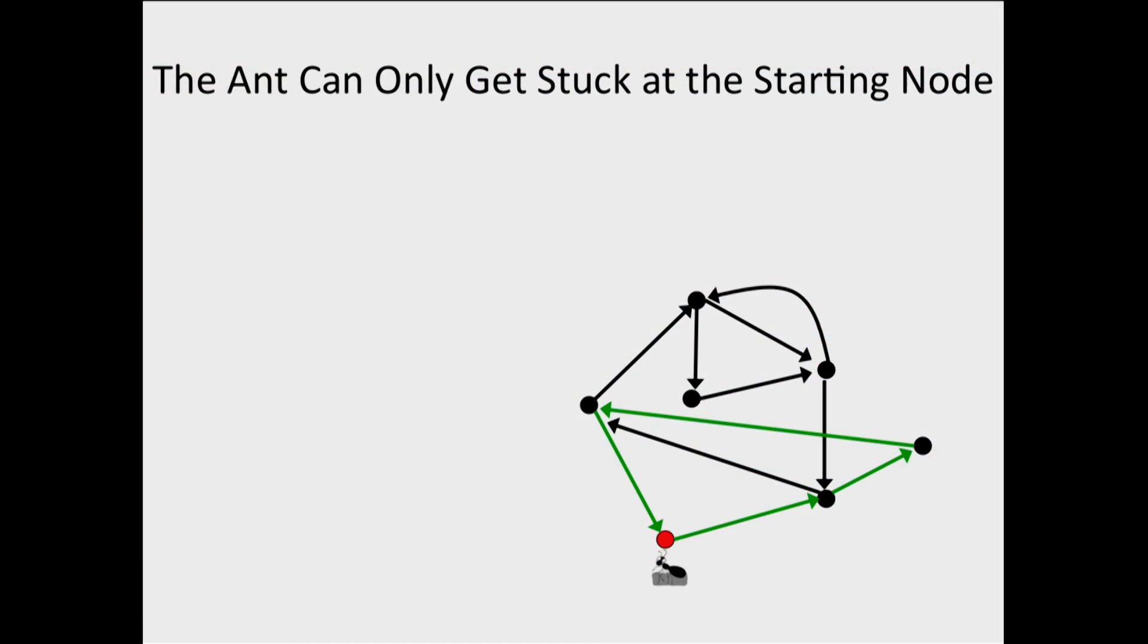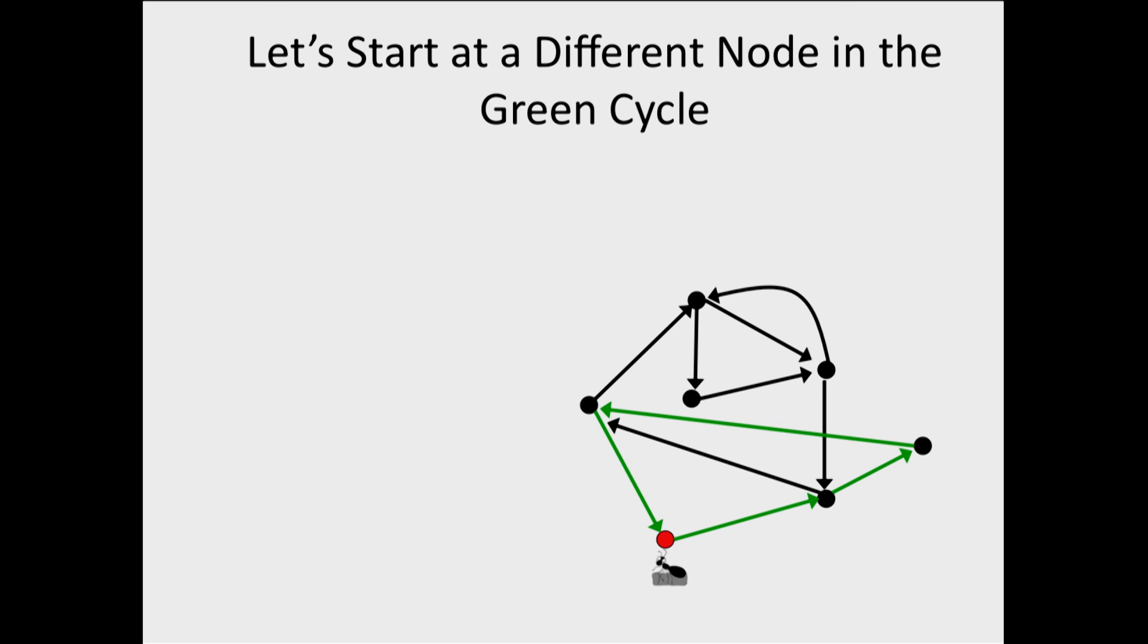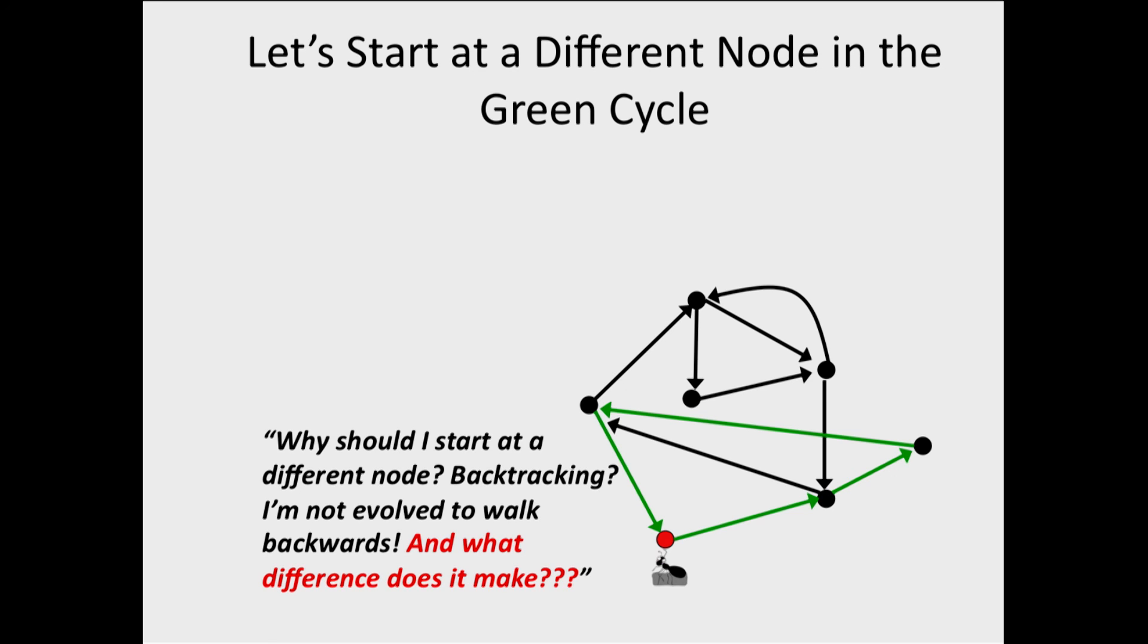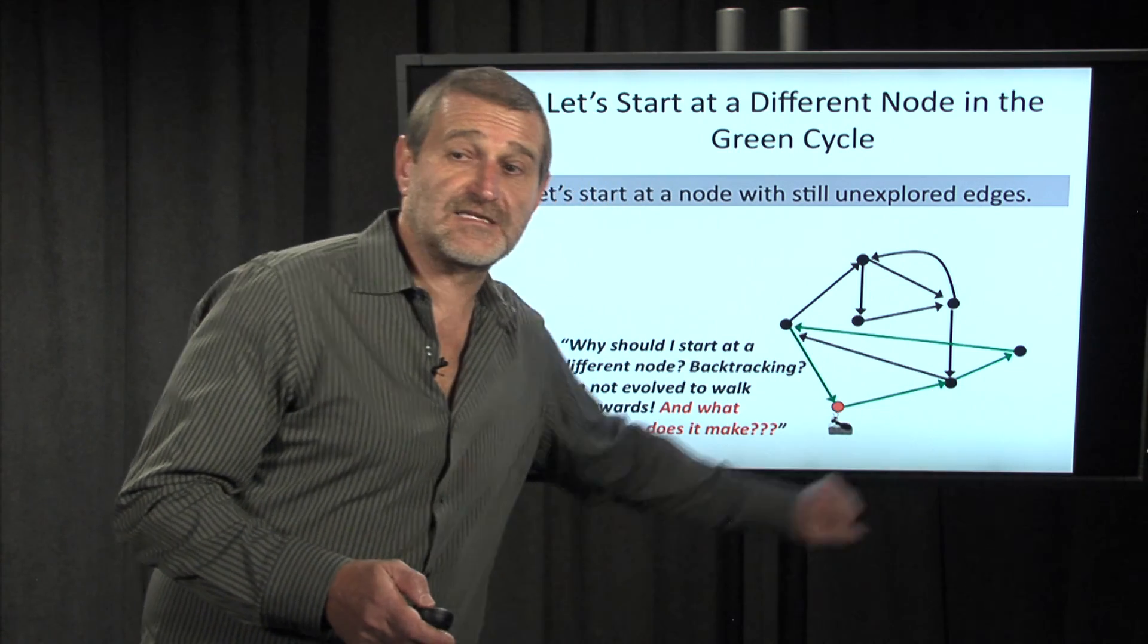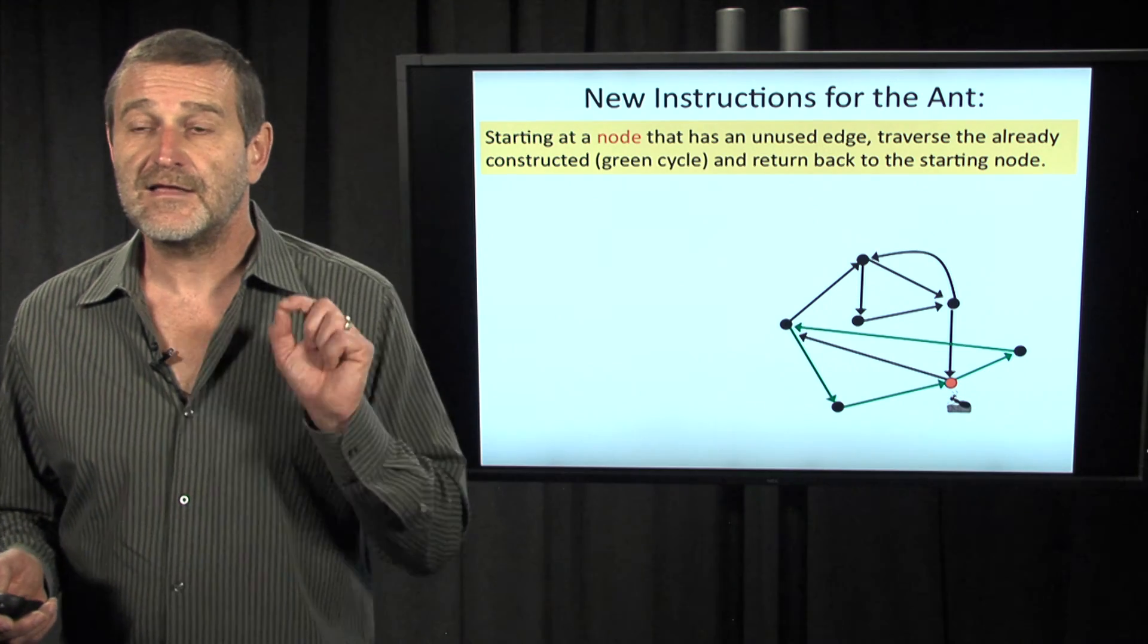What can we do afterwards? The ant failed to construct the Eulerian cycle because it did not visit all edges of the graph. But maybe we can start at a different node in the green cycle. It's not clear what difference it makes, but why shouldn't we try to start at a node in the cycle where there are still unexplored edges? For example, at this node in the cycle there are still unexplored edges left. So let's force the ant to start here at this node.